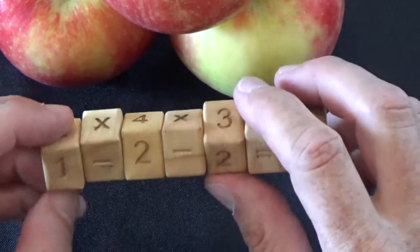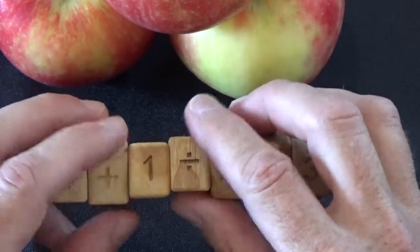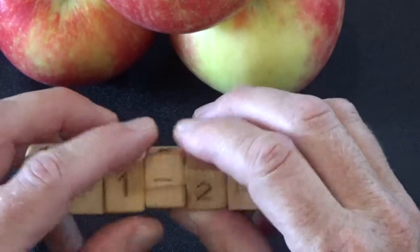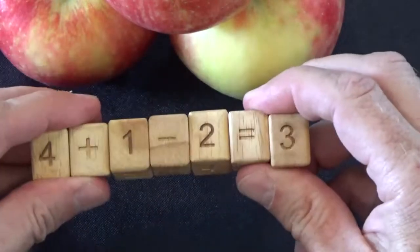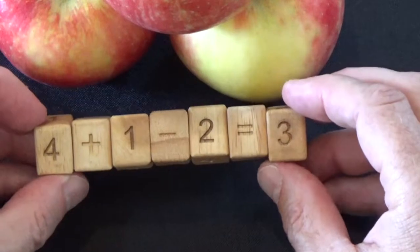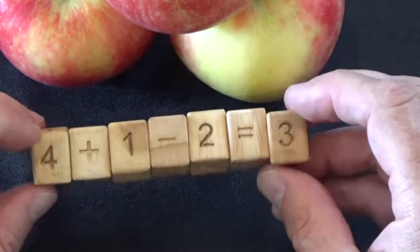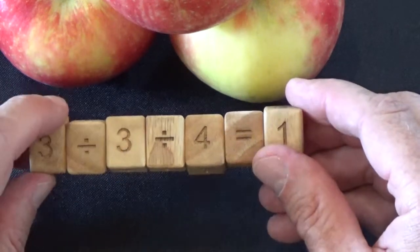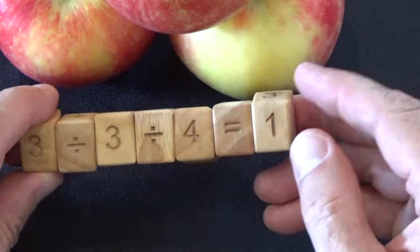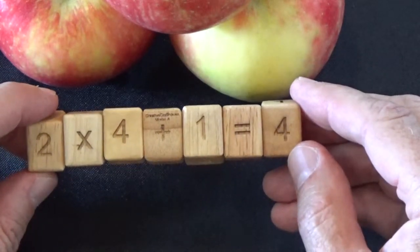So for example we could do 4 plus 1 is 5 minus 2 equals 3. That is a correct math equation. But if we flip over here, 3 divided by 3 is 1 divided by 4 is not equal to 1, so that is not a correct math equation.